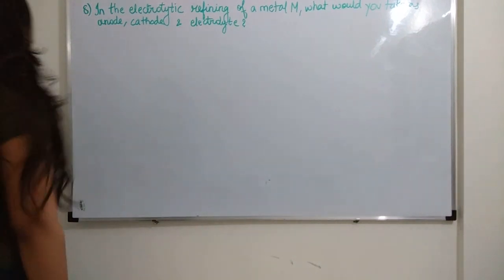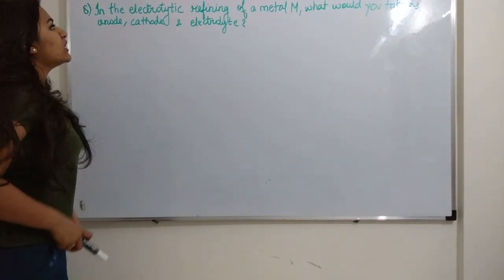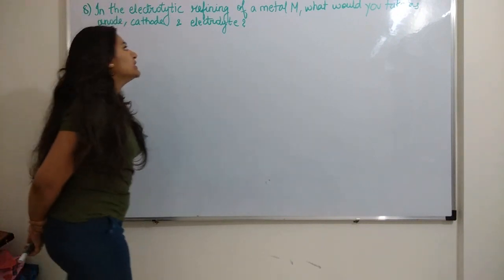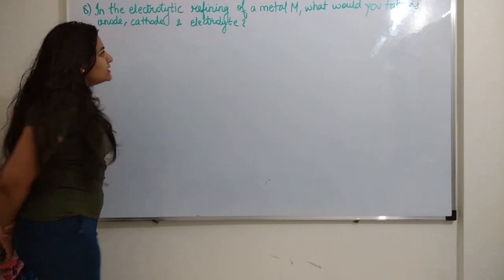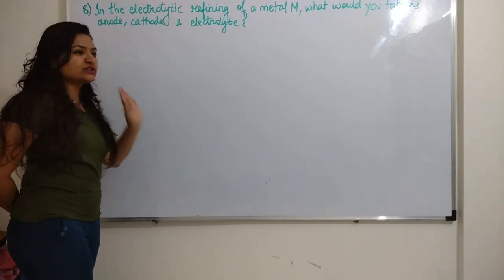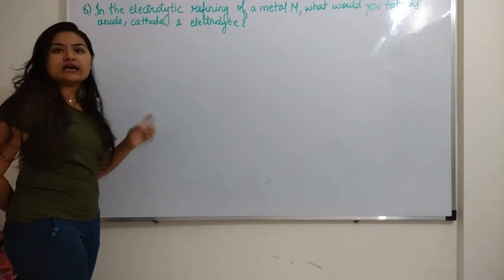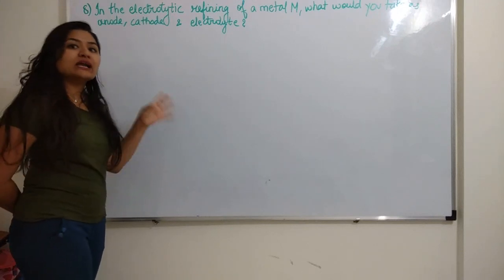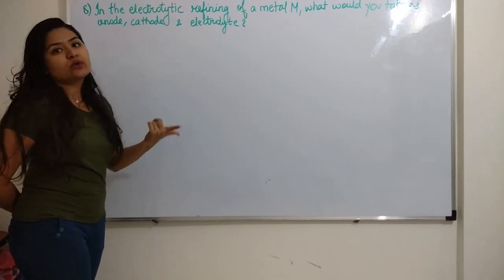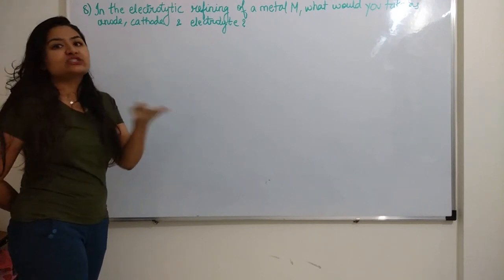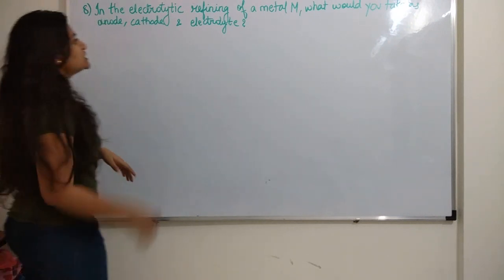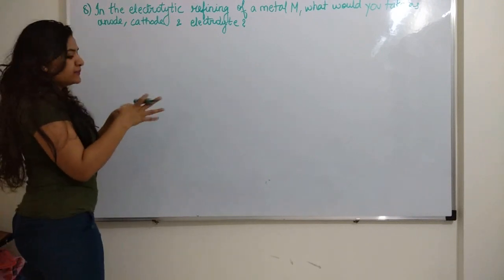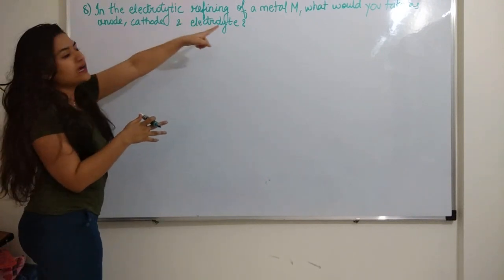So the next question is: in the electrolytic refining of a metal M, what would you take as anode, cathode and electrolyte? Now, I'll be telling you the answer to this question first. And after that, I am going to take an example and also explain that.